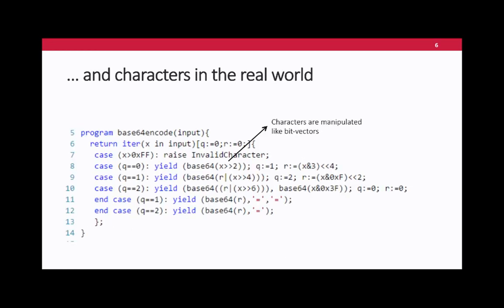Moreover, when you actually use characters — the character data structure or character type in any programming language — these characters are not treated as elements from a finite alphabet. They are treated as bit vectors. In some sense, the classic models are not aware of this structure and don't take advantage of it.